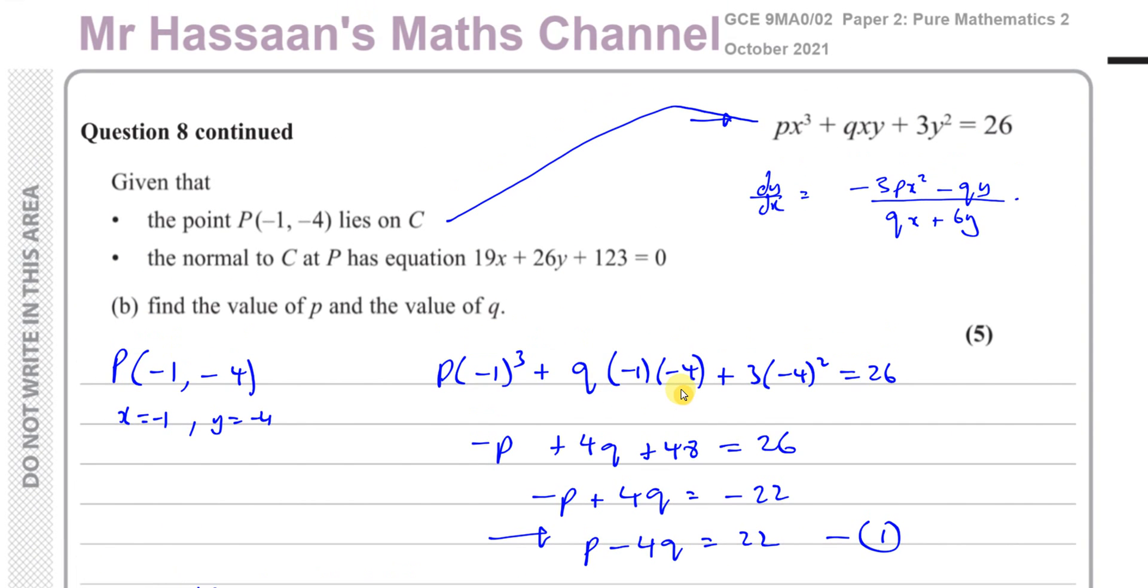So that concludes question number eight from October 2021. As I said, from this GCE paper from the UK A-level. And other questions from this particular paper can be found in the playlist that should appear in this region over here. Other questions from implicit differentiation from P4 can be found in this playlist. You can subscribe to my channel by clicking on this link. Thank you for watching and see you soon.